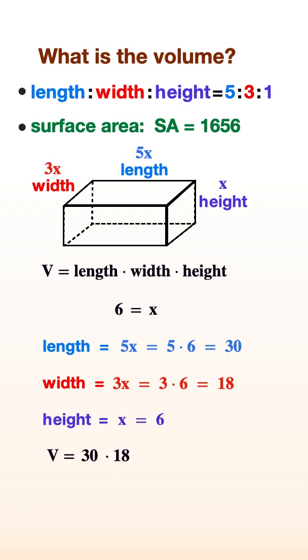Thus, the volume is 30 times 18 times 6, which equals 3240.